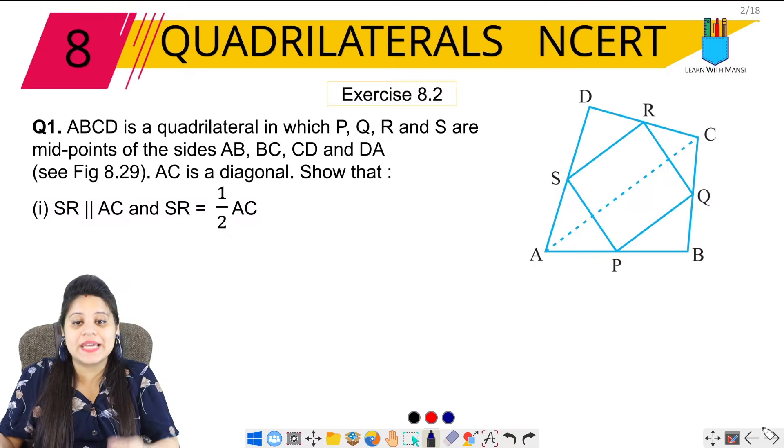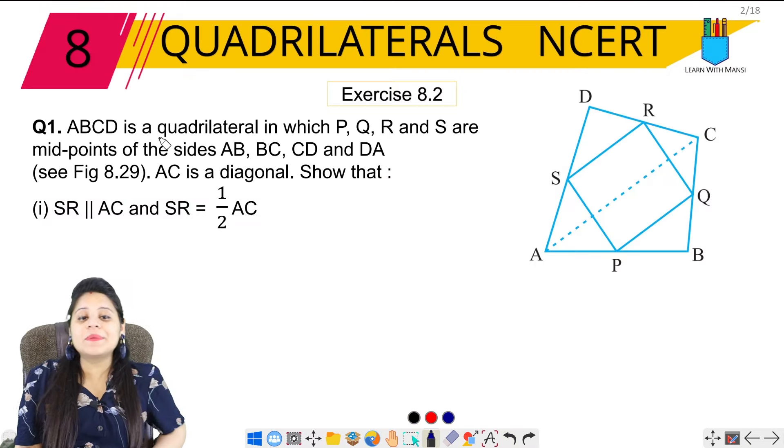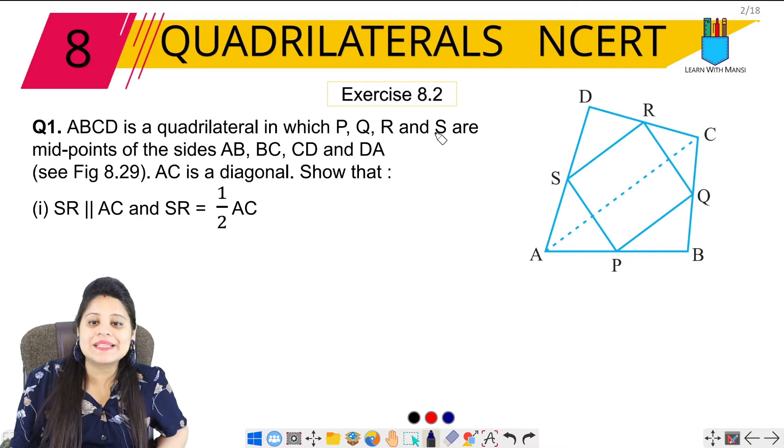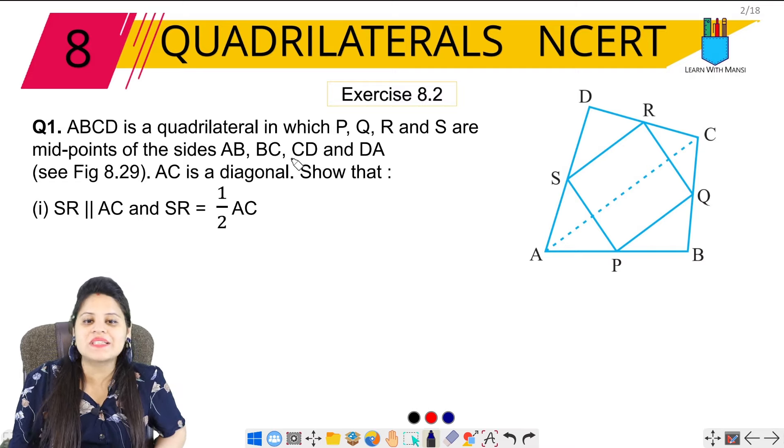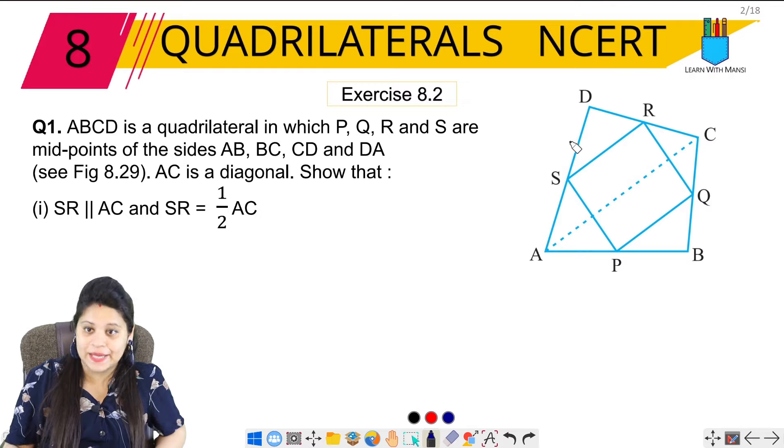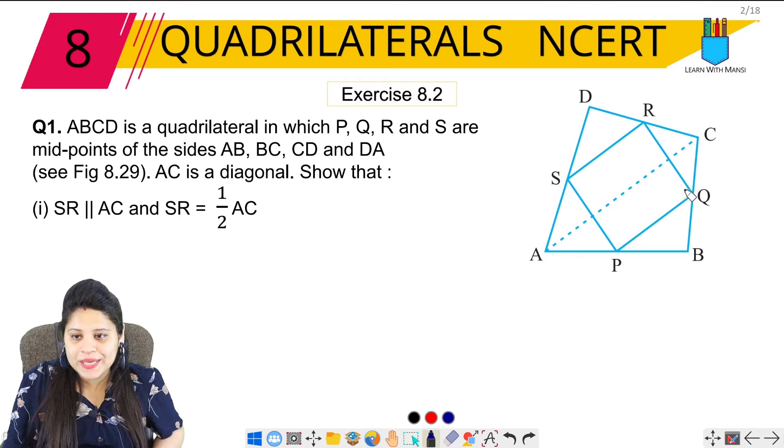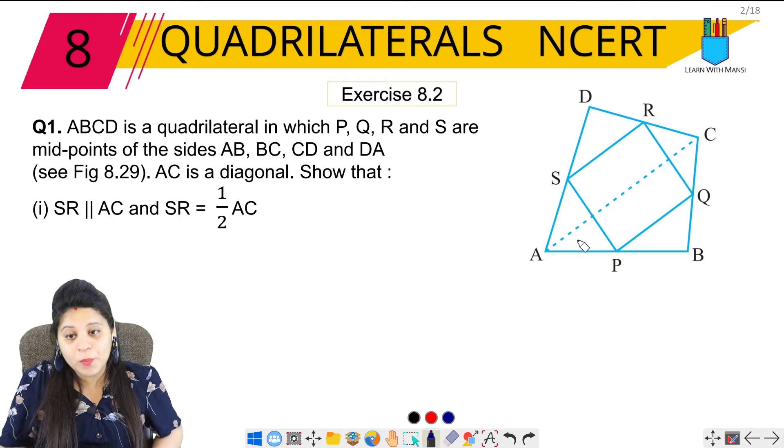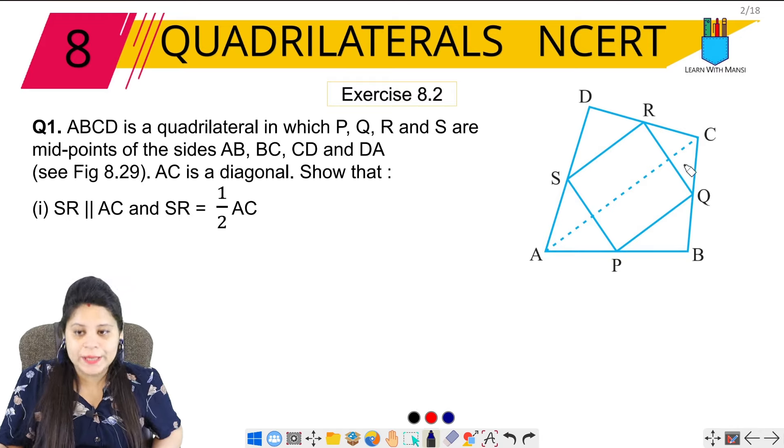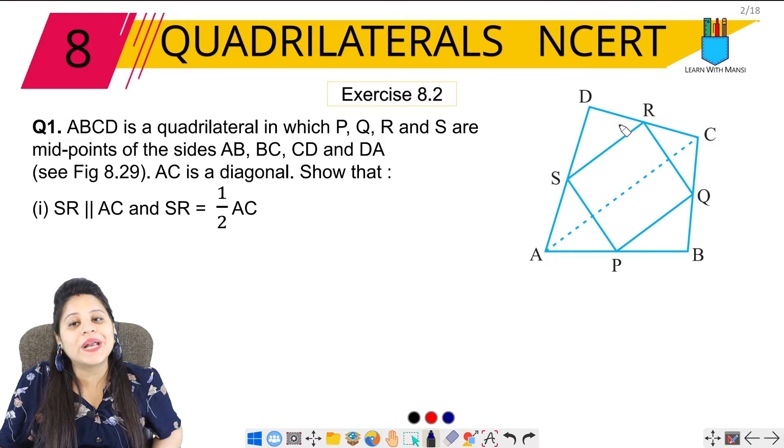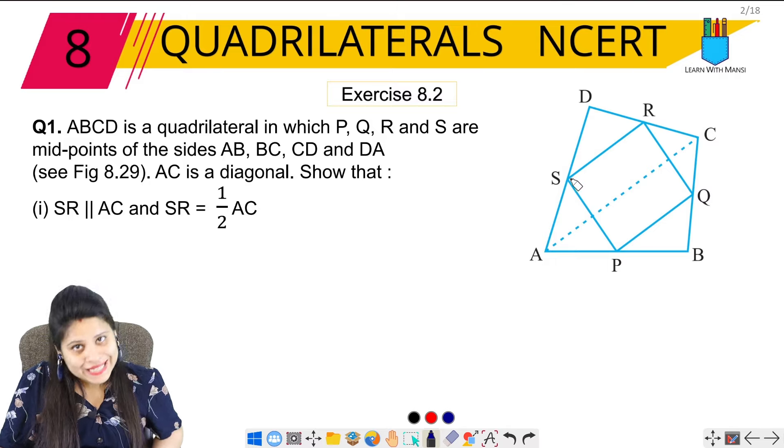The first question: ABCD is a quadrilateral in which P, Q, R, S are midpoints of the sides AB, BC, CD and DA respectively. AB midpoint is P, BC midpoint is Q, CD midpoint is R, and AD midpoint is S.